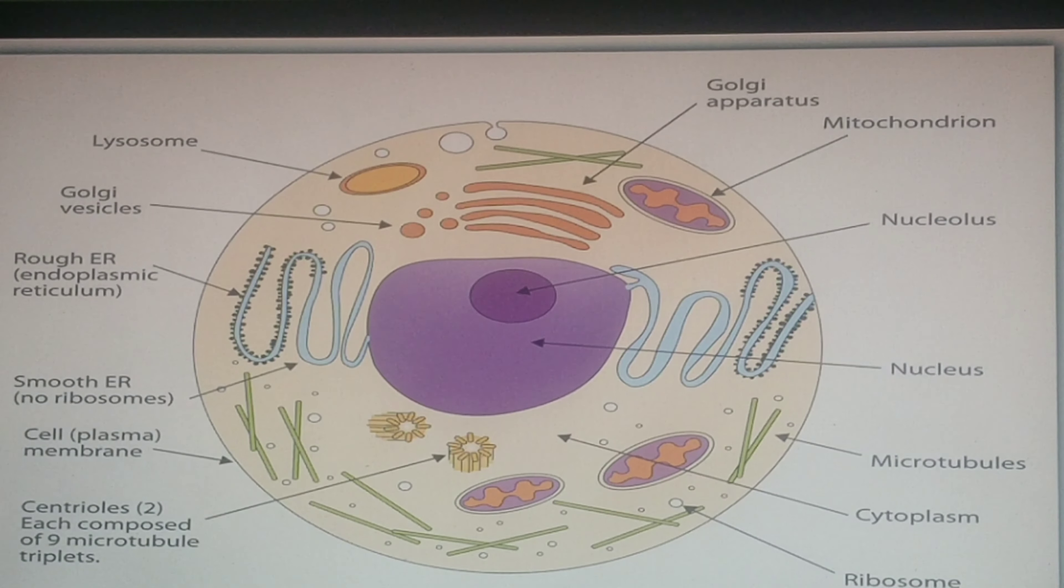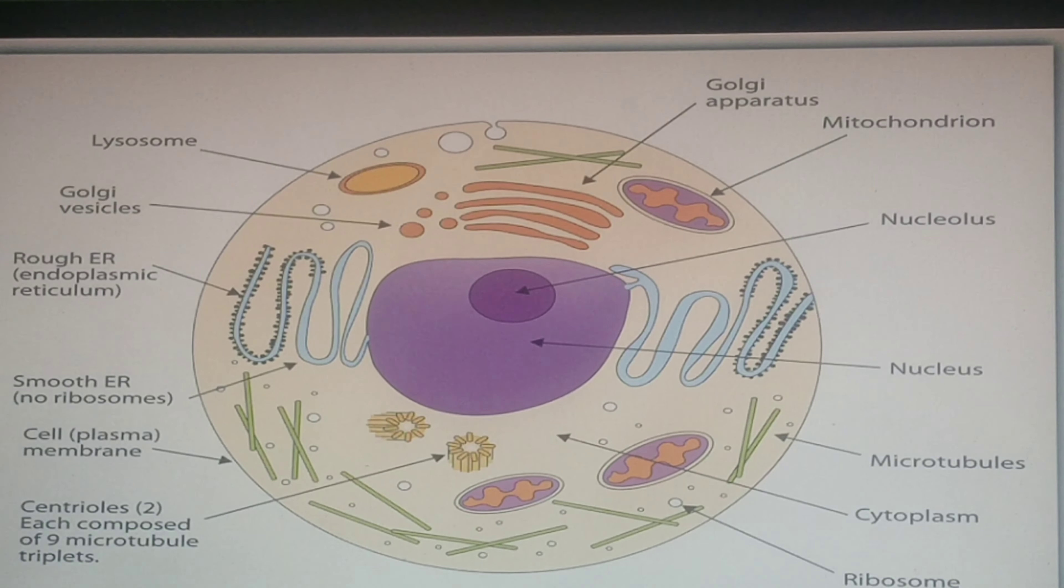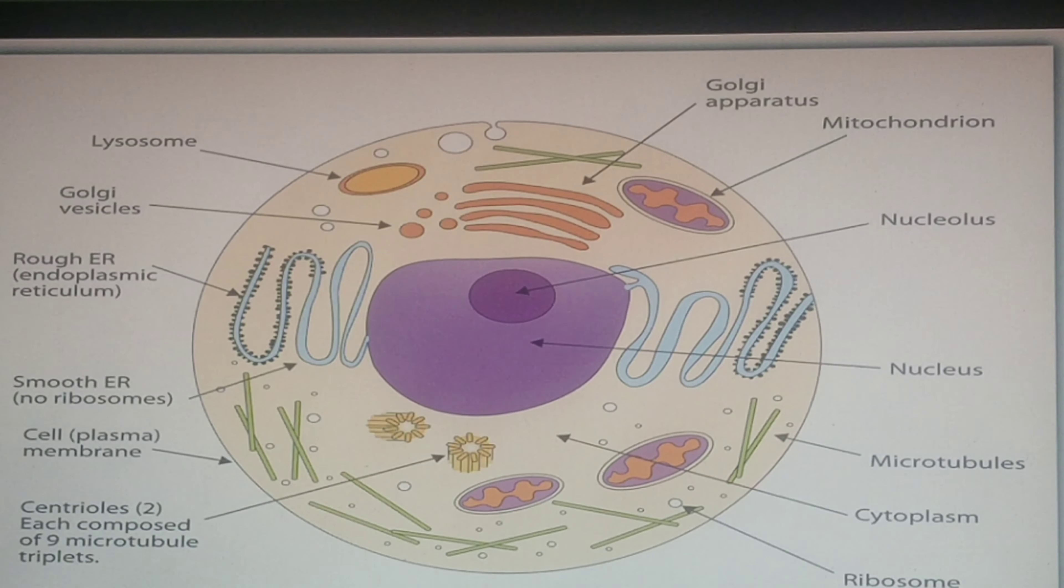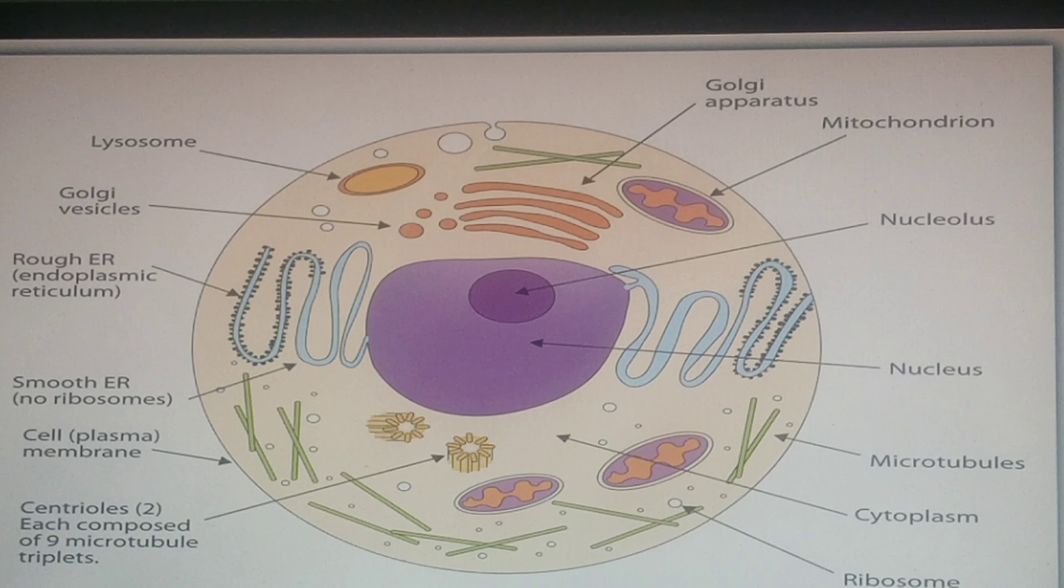So, now let us see the characteristics of these parts. Let us start with the nucleus. The nucleus contains a cell's DNA. It is genetic material.